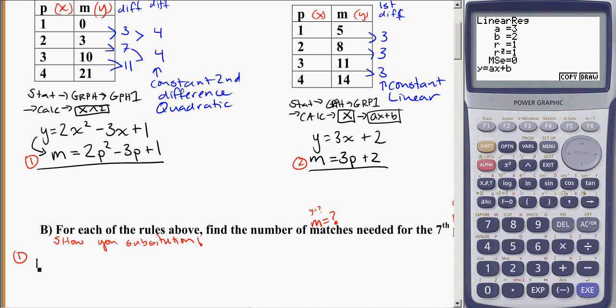So if my rule says, m is equal to 2p² minus 3p plus one, I'm going to show that I'm using p is equal to seven. So instead, I'm going to write, m is equal to two times seven squared. Remember, invisible time signs between a letter and a number. Minus three times seven plus one.